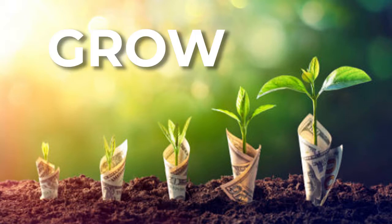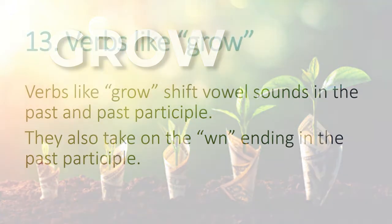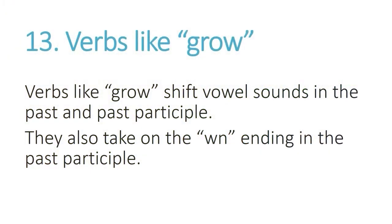Verbs like grow also have an N ending, but it's not an EN ending. Verbs like grow shift vowel sounds in the past and the past participle. They also take on the WN ending in the past participle. Let's look at some examples.